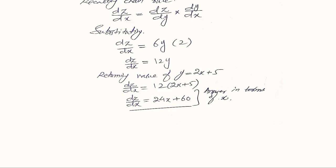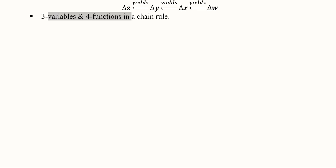We need to express the answer in terms of x, because we want to find the effect of x on z, but the expression 12y is in terms of y. We substitute using the given function y equals 2x plus 5, replacing y with its expression in x. After simplification, we get the final answer in terms of x, which fully describes how z is affected by x via y.